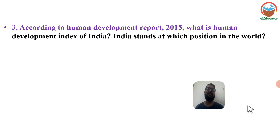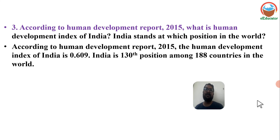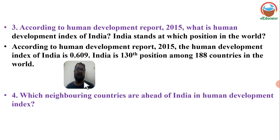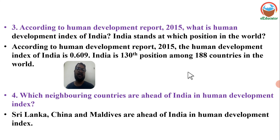According to Human Development Report 2015, what is the Human Development Index of India and India's position in the world? The Human Development Index of India is 0.609. India stands at 138th position among 188 countries in the world as per 2015 data. Which neighboring countries are ahead of India in Human Development Index? Sri Lanka, China, and Maldives are ahead of India in Human Development Index.